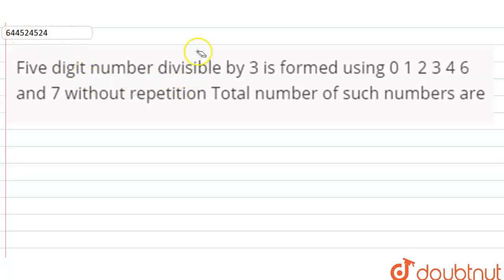Five digit number divisible by 3 formed using 0, 1, 2, 3, 4, 6 and 7 without repetition. Total number of such numbers are.